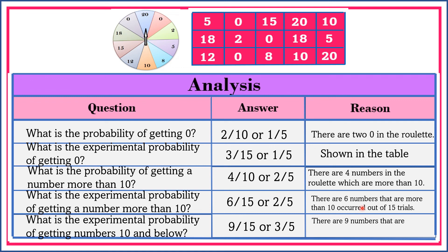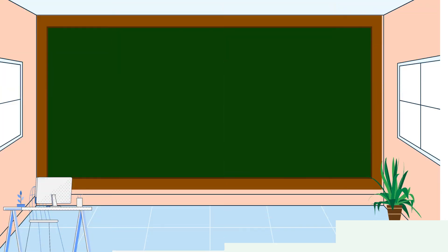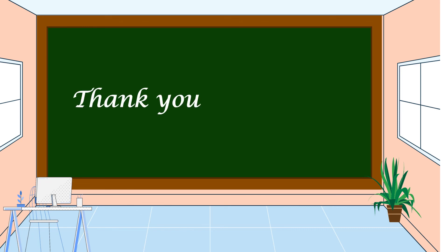There are 9 numbers that are 10 and below out of 15 trials. To analyze data from an experiment, it is important that you know the probability and experimental probability of the event. I hope that you understand our lesson for today. Thank you for watching.